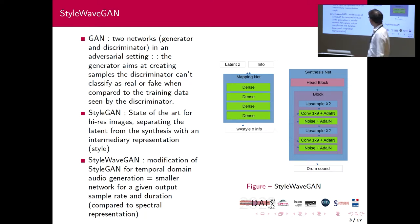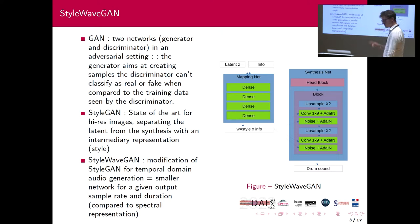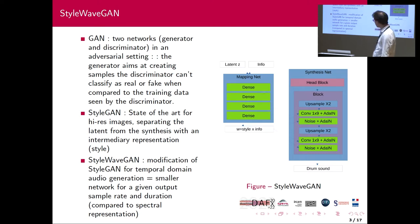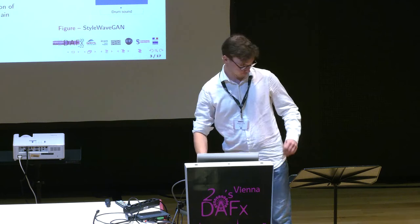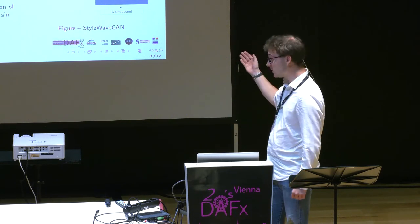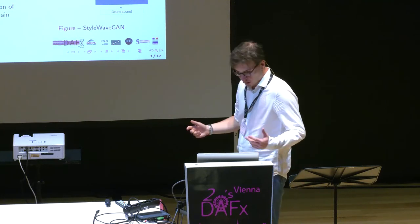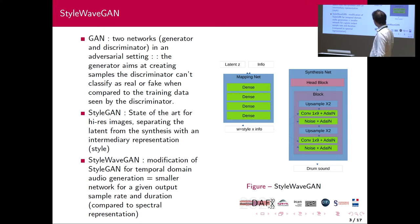We don't use a plain GAN. We use an evolution called StyleWaveGAN, where the latent vector is mapped to an intermediary space, and this intermediary representation is then forwarded to a synthesis network, so all the layers have the same information. Compared to StyleGAN, which is a network for images, we flattened everything to generate waveforms, and did a few other modifications like using adaptive noise layers to add noise to the sound, which is quite useful for cymbals but not so much for the rest.